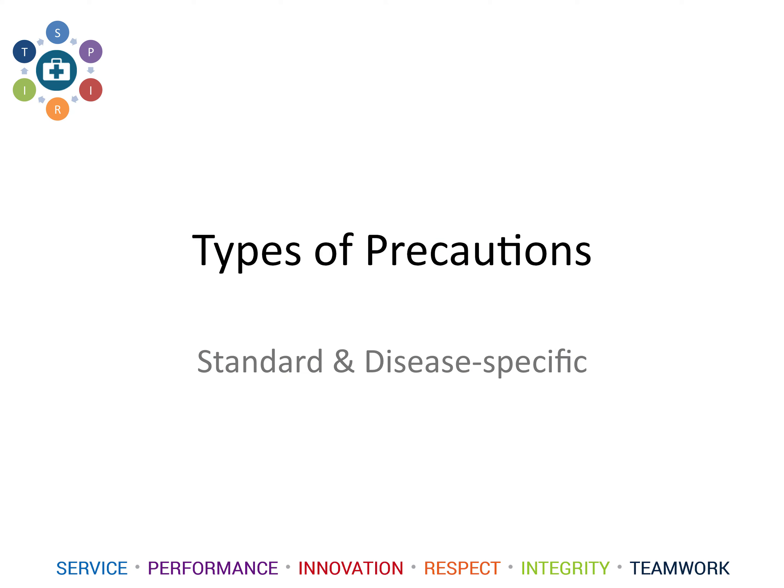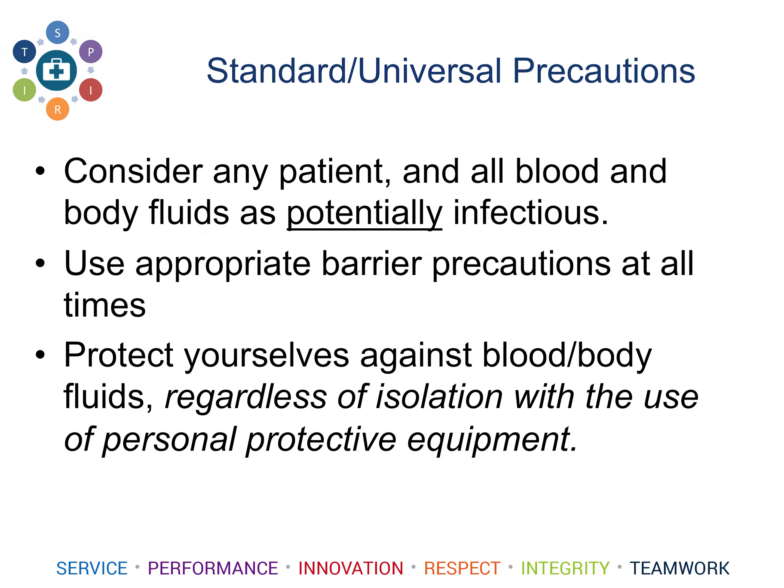Now we will move into the different types of precautions used in the healthcare setting. Some are more applicable to the hospital, but there are also clinical practice uses as well. When it comes to standard or universal precautions, we must consider any patient and all blood or body fluids as potentially infectious. If a patient in the waiting room is coughing or sneezing, offer them a mask, Kleenex, and hand hygiene. If a patient has a cut and is bleeding, offer a band-aid or gauze but treat them as potentially infectious — wear gloves. Always protect yourself against any blood or body fluid, regardless of isolation, because we never know what the patient may or may not have.